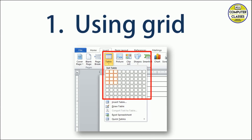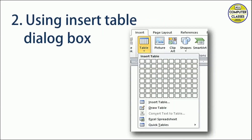The first method is using the Grid. When you open MS Word, click on the Insert tab and you will see the Table option. Click the small arrow integrated there and you will see all the ways to create tables. The first option is the Grid. As many rows and columns as you want, just move your mouse pointer and you will get that many rows and columns on your screen.